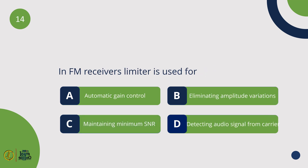In FM receivers, the limiter is used for eliminating amplitude variations.